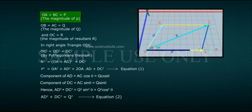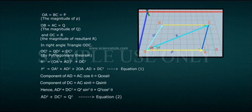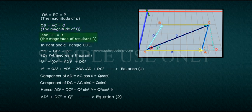From the parallelogram: OA equals BC equals P (the magnitude of P), OB equals AC equals Q (the magnitude of Q), and OC equals R (the magnitude of the resultant R).